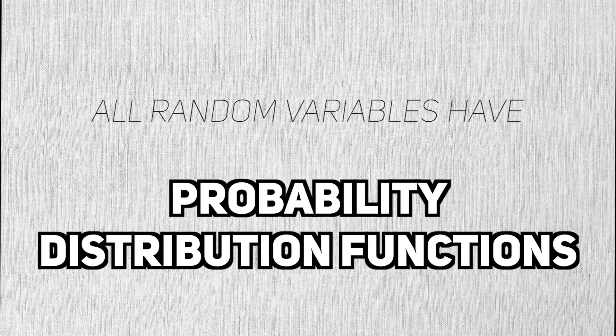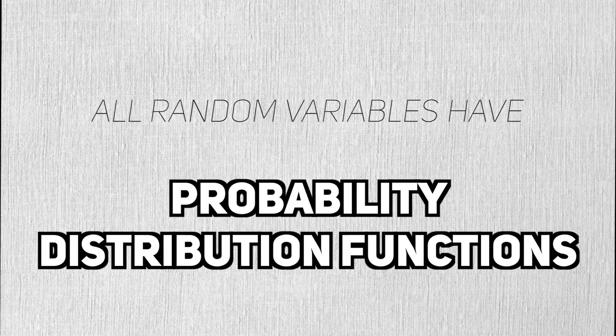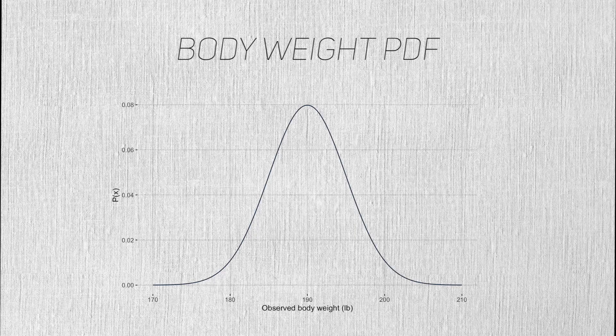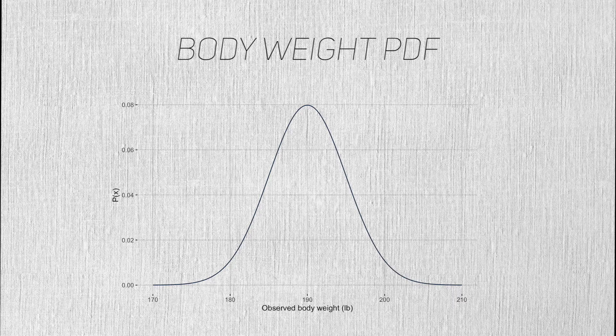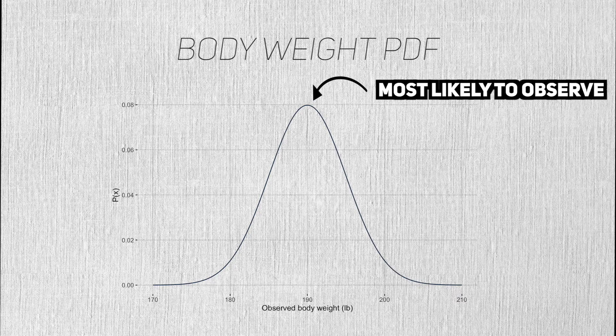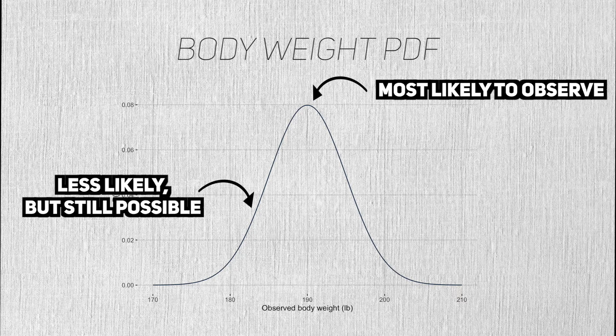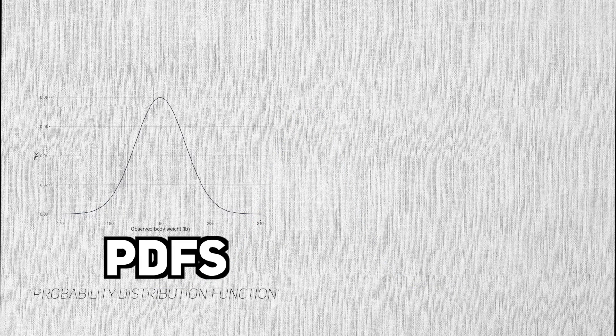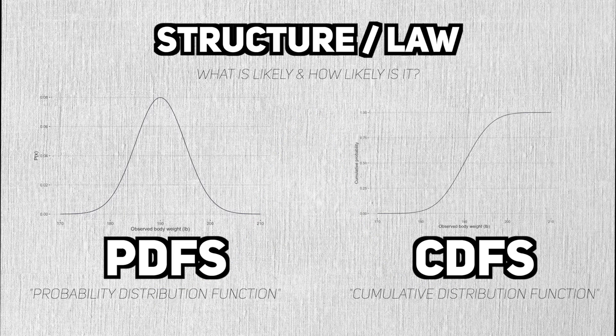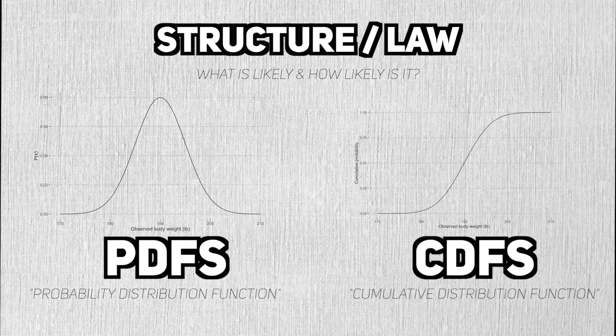All random variables have probability distribution functions, or PDFs for short. Let's say this PDF describes the weight I see when I weigh myself. The higher the PDF is, the more likely I will see that value, and vice versa. PDFs, and their close cousin, the CDF, are what describe the structure or law of a random variable.